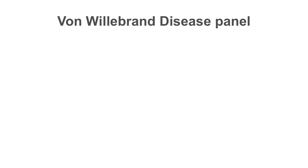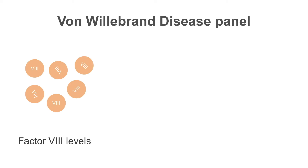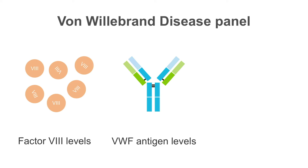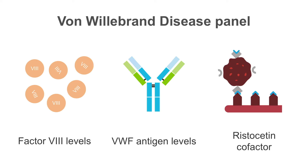There is a test called the von Willebrand's disease panel, which consists of three tests: the first is measuring factor 8 levels, the second is measuring von Willebrand's factor antigen levels, and the third is measuring von Willebrand's factor functional activity, also known as ristocetin cofactor activity.